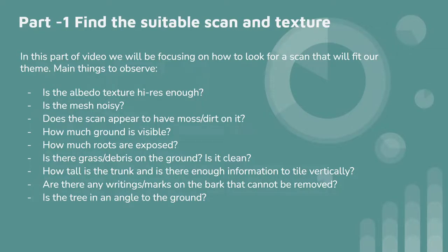Hello and welcome to part 1 of the photogrammetry process for vegetation for Unreal Engine 5. In this part we'll be focusing mainly on how to look for a scan that will fit our theme for the game. We need to follow certain rules before deciding to download a certain scan. I will take you through what factors you need to check before you finalize on a scan to process it further in ZBrush, then into Substance Designer, and into Unreal Engine for testing.